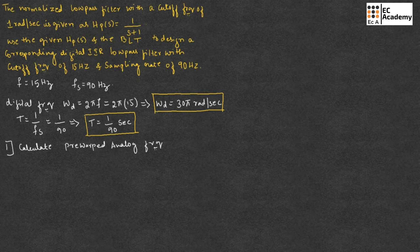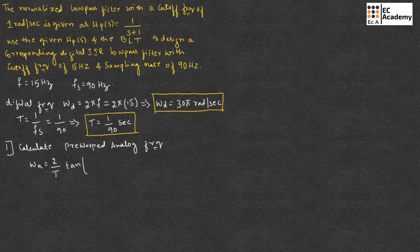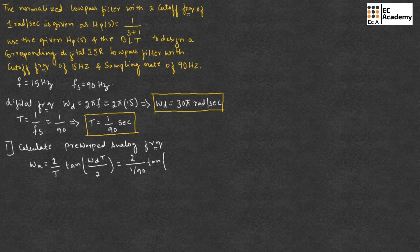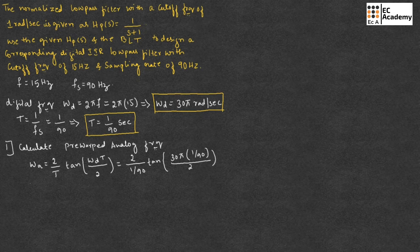The first step is to calculate the pre-warped analog frequency. We use omega_A equal to (2/T) * tan(omega_d * T / 2). Substituting the values with T equal to 1/90, we simplify and obtain omega_A equal to 103.92 radians per second.